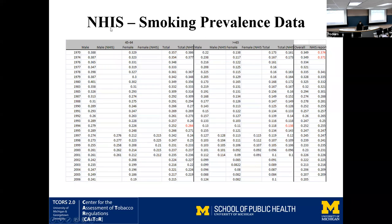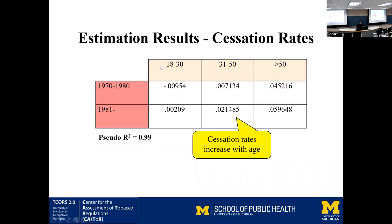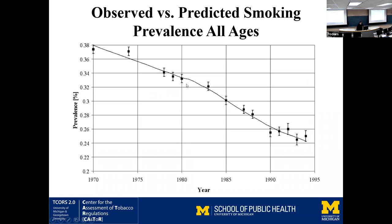Using NHIS smoking prevalence data, we compare the results of the model with the data, and then we minimize weighted least squares to get an estimation of cessation rate. From surveys we can infer the initiation rate, but cessation rate net of relapses is more difficult. So we decided to use the model itself to do the estimation. The continuous line is the fit of the model.